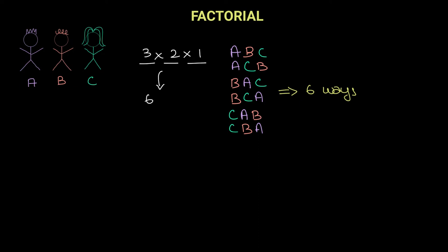And this is where the concept of a factorial comes in. Three factorial can be written as three into two into one, which is essentially arranging three objects A, B, C in three factorial ways — three into two into one — which gives you six. And as we have found here, there are six ways of arranging three people.